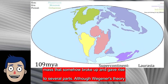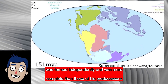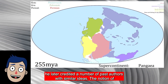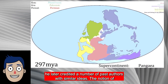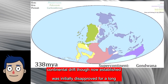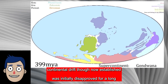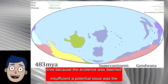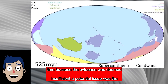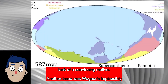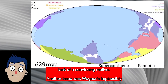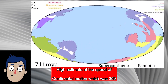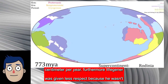Although Wegener's theory was formed independently and was more complete than those of his predecessors, he later credited a number of past authors with similar ideas. The notion of continental drift, though now established, was initially disapproved for a long time because the evidence was deemed insufficient. A potential issue was the lack of a convincing motive.